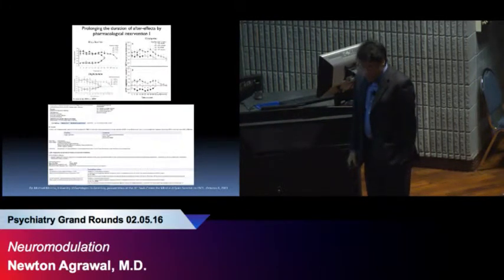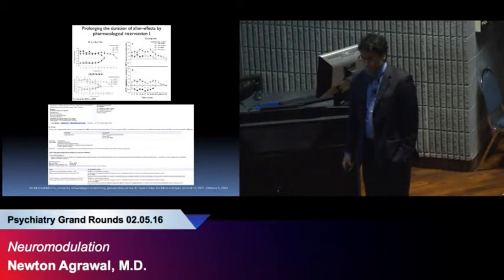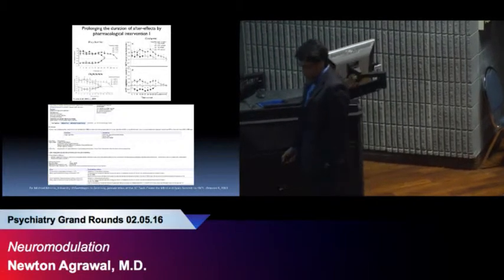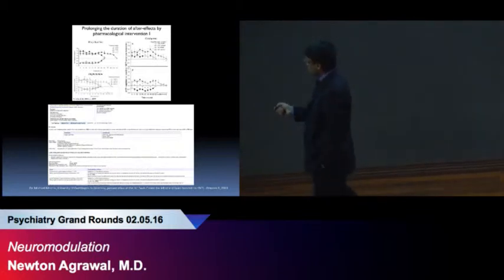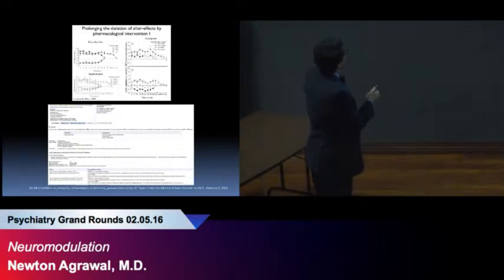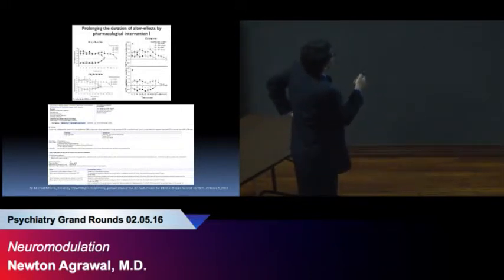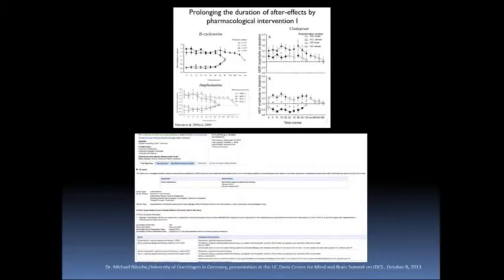So one of the things that we often do in psychiatry is we provide co-agonists. So what would be the effect of actually adding pharmacology when administering this neurostimulation? Well, this group here, Michael Nietzsche, he's one of the leaders in this field in Germany, looked at the effects of D-cycloserine and showed that these particular medications, amphetamines, D-cycloserine, and SSRIs such as Celexa, actually cause a prolongation of the duration of the effect of the neuroplastic changes. And you see that this is replicated in those three drugs.